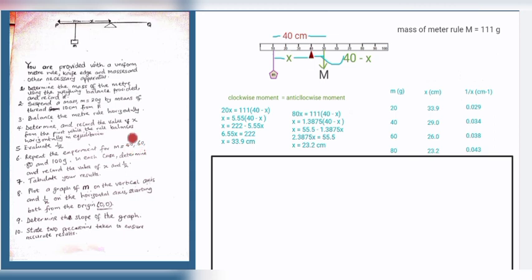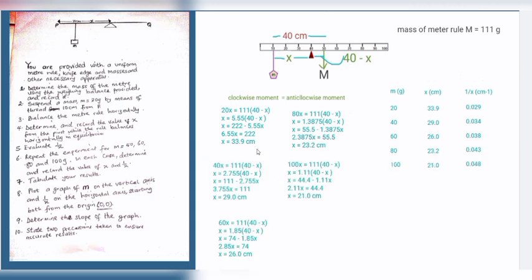And I used this method for all other masses. So remember that we have to replace the 20 gram mass with 40, 60, 80, and 100 grams. So on replacing those masses, I arrived at these values. For 40 grams, I did the same thing and arrived at 29.0 cm. I did the same for 60 grams and arrived at 26.0 cm. For 80 grams, I arrived at 23.2 cm. And finally for 100 grams, I got 21.0 cm.